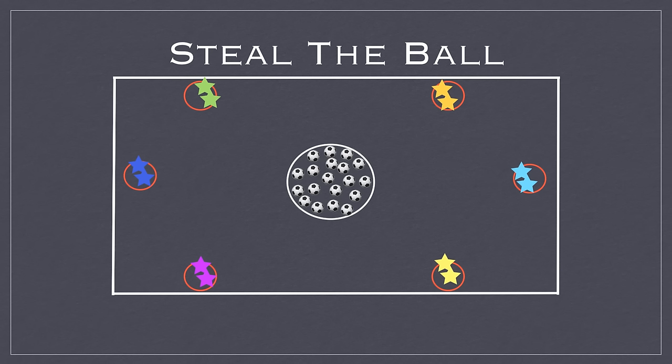When the whistle blows, the first person from each team runs to the middle area and collects a ball. Since it's soccer, they'll have to dribble the ball back to their area and into their hula hoop, which is their collection area.